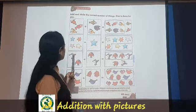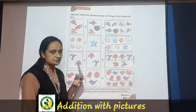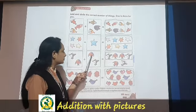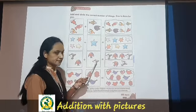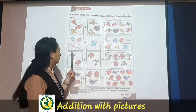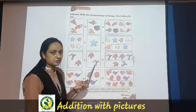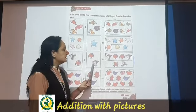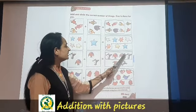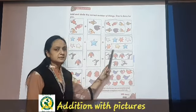Now, what can we see? There are 2 in one set and 2 in the other set as well — 2 kinds. So 2 plus 2: 1, 2, 3, 4. So the answer is 4 — circle 4.